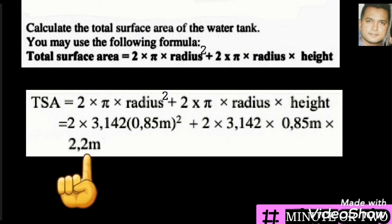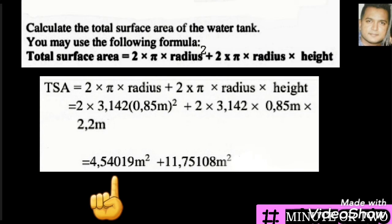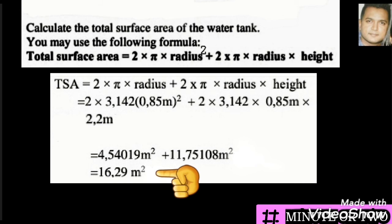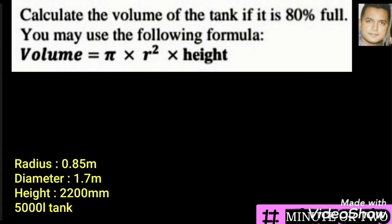For the height value, we were given 2200 millimeters, which must be converted to meters since our radius is already in meters — we must use one unit of measure. Converting 2200 millimeters gives us 2.2 meters. The first part of the calculation before the plus sign gives 4.54019, and the second part gives 11.75108 m². Our final answer is 16.29 m² — meters squared because it is surface area.